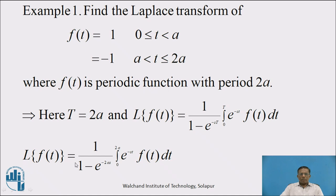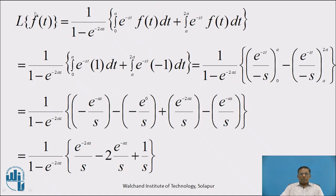To substitute the value of f(t), we have to split this integration into two parts. Therefore, Laplace of f(t) equals 1 upon (1 minus e raised to minus 2as) into the bracket: integration with limit 0 to a of e raised to minus st times f(t) dt, plus integration with limit a to 2a of e raised to minus st times f(t) dt. Substituting, f(t) = 1 on [0, a] and f(t) = −1 on [a, 2a], we get 1 upon (1 minus e raised to minus 2as) into bracket: integration 0 to a of e raised to minus st dt, minus integration a to 2a of e raised to minus st dt.